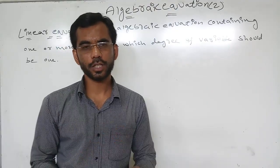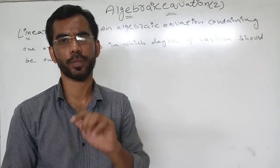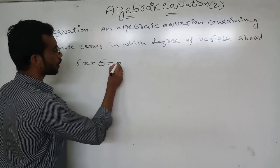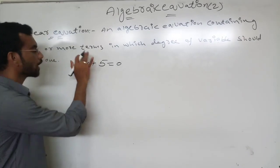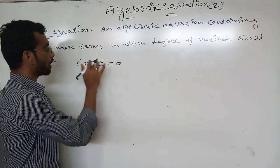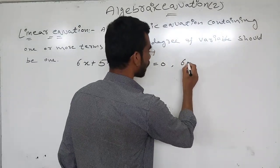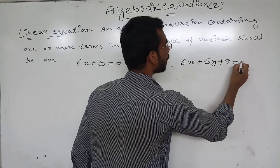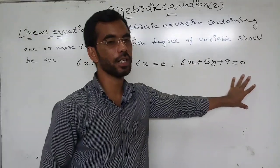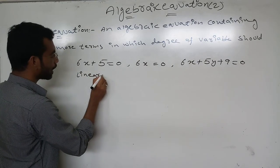The highest power of an equation or expression is called its degree. Now, see here: 6x + 5 = 0. What is the degree of x? Nothing is written, so it will always be one. This is an example of a linear equation.